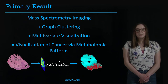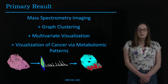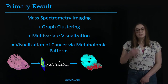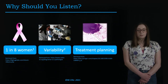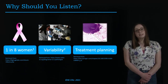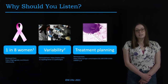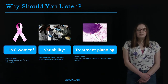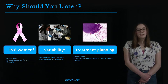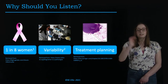In this talk, we'll be discussing the primary result of taking mass spectrometry imaging, graph clustering, and multivariate visualization to achieve the visualization of cancer from metabolomic patterns. Breast cancer affects one in every eight studied women. The current gold standard form of detection, which is analysis of tissue samples by an expert pathologist, is known to be both time-consuming and to have high levels of variability. This can greatly impact treatment planning, especially for time-sensitive tasks such as tumor margin analysis.